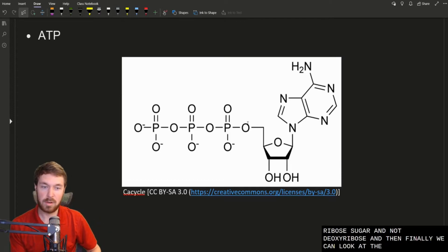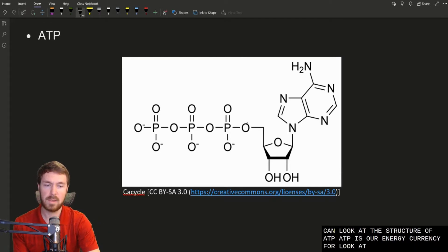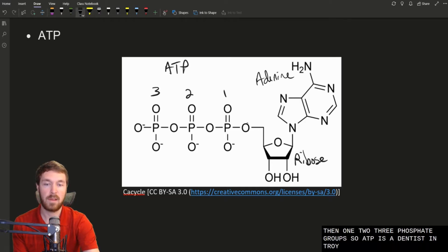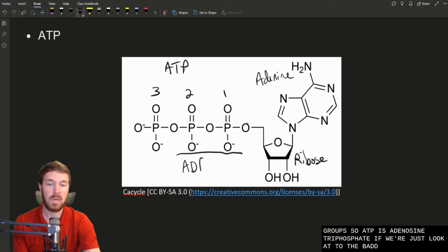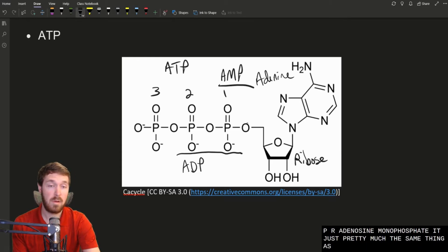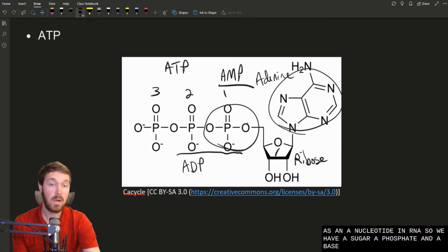And then finally, we can look at the structure of ATP. ATP is our energy currency. If we look at this, ATP has a ribose sugar. This is an adenine base, a nitrogenous base. And then one, two, three phosphate groups. So ATP is adenosine triphosphate. If we were to just look at two, that'd be ADP, adenosine diphosphate. Or if it just had one phosphate, it'd be called AMP or adenosine monophosphate. Adenosine monophosphate is just pretty much the same thing as an A nucleotide in RNA. So we have a sugar, a phosphate, and a base. So a lot of people don't realize that ATP is very identical to an A base in RNA.